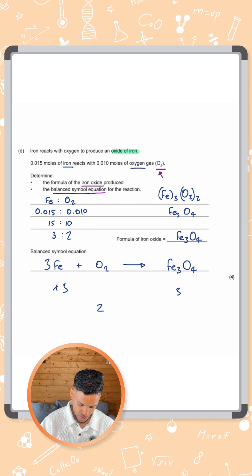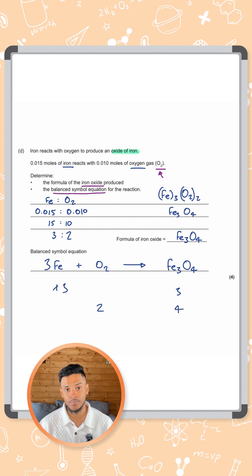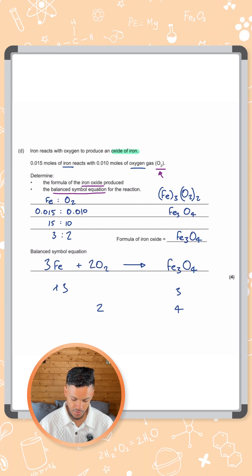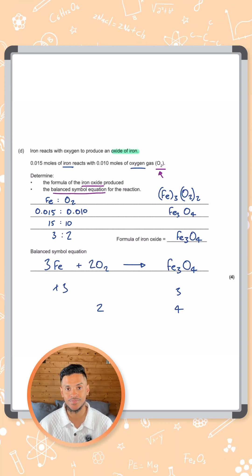Now for oxygen, we've got 2 on the left and 4 on the right, so that's not balanced either. We can add a 2 in front of the oxygen to balance it. And there we go, we have a balanced symbol equation.